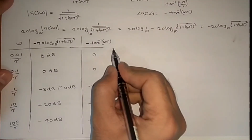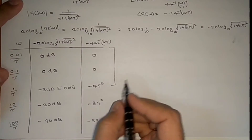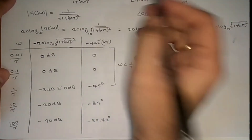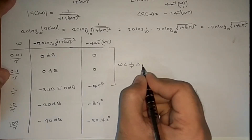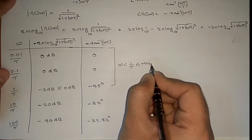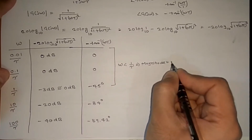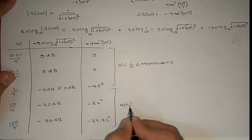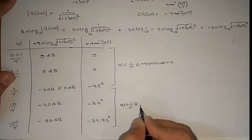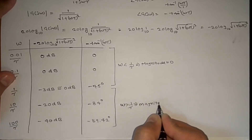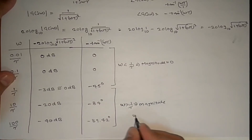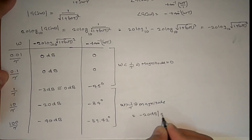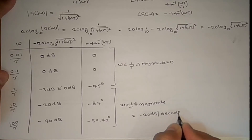We can observe that for ω less than 1/τ (the corner frequency), the magnitude is 0 dB. For ω greater than 1/τ, the magnitude falls at −20 dB per decade, so it is decreasing.